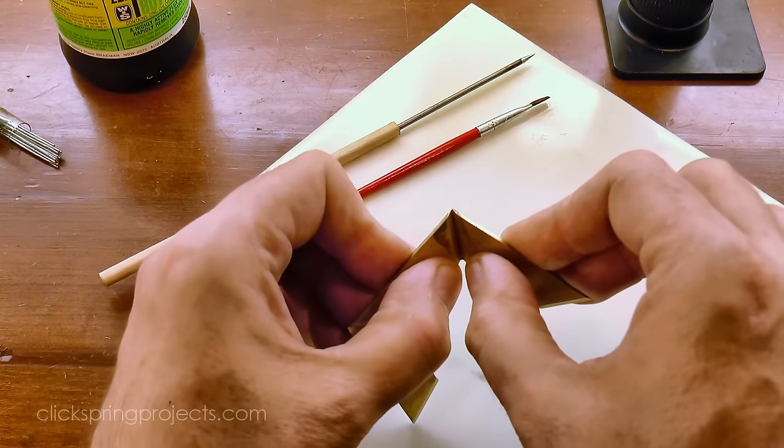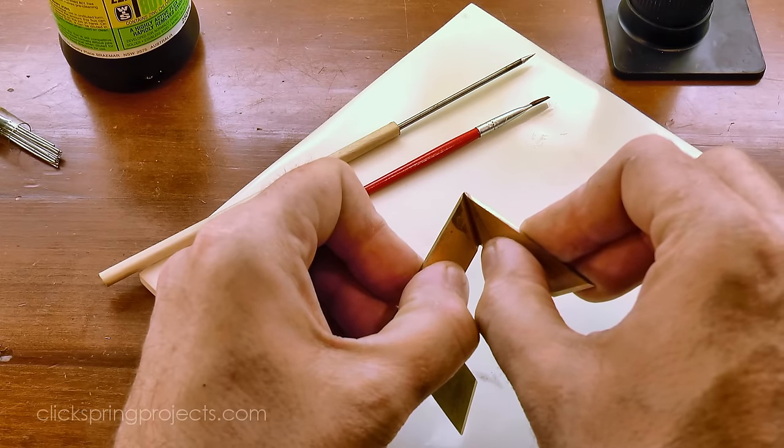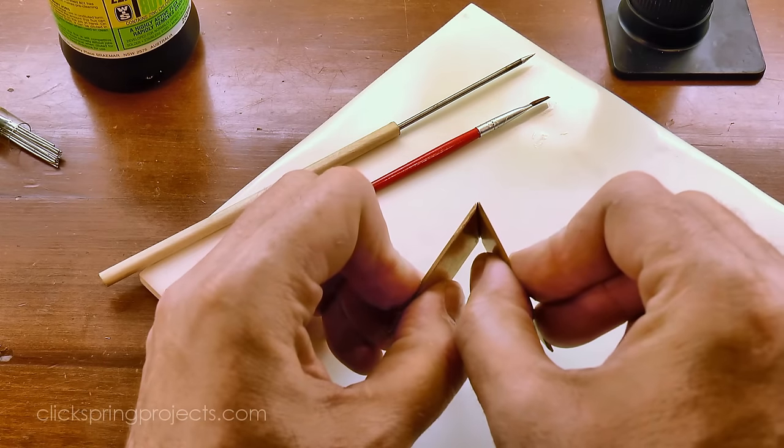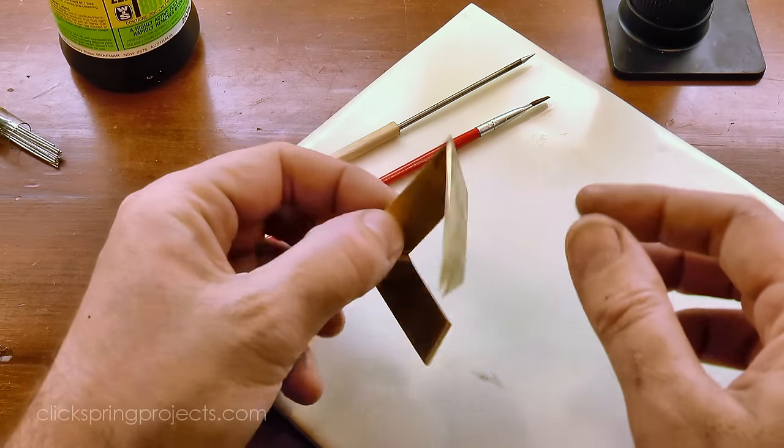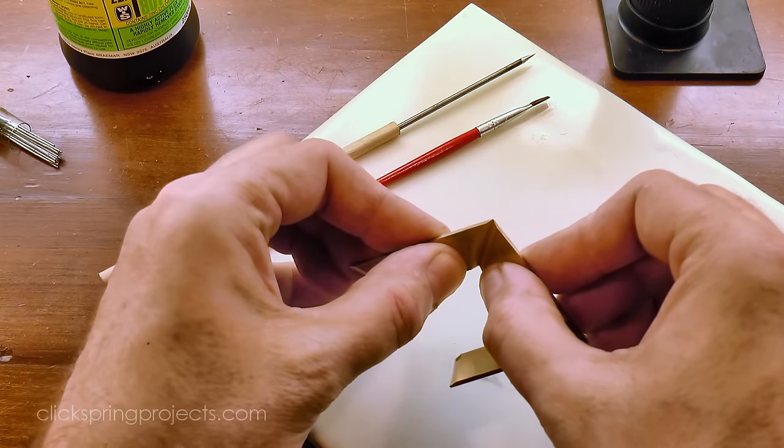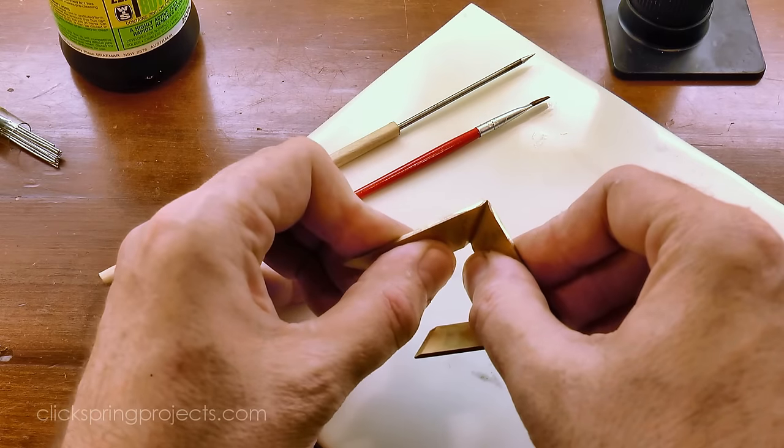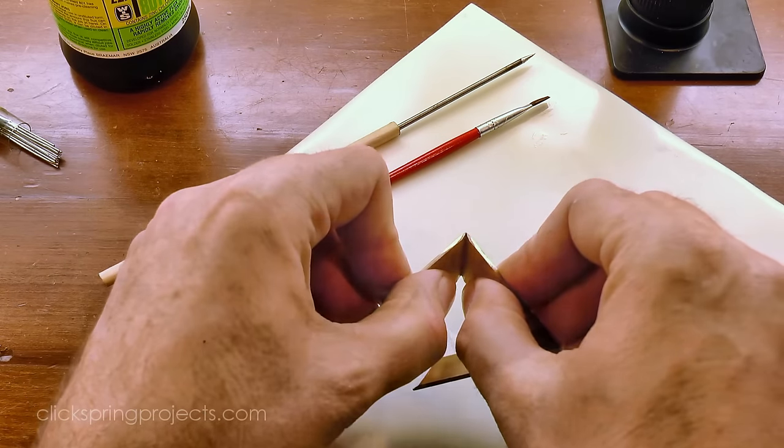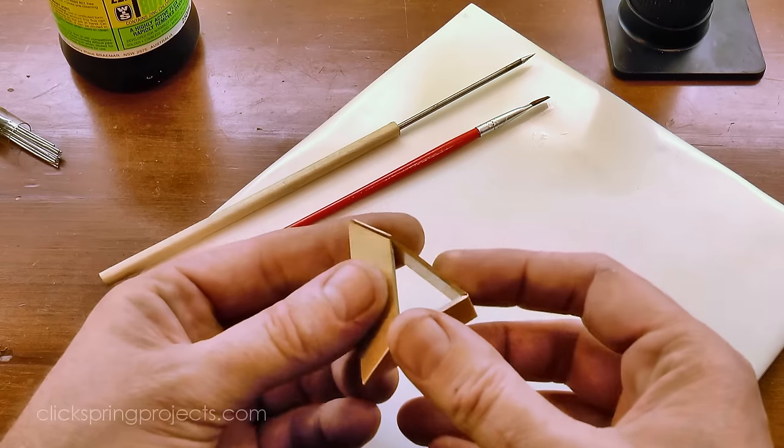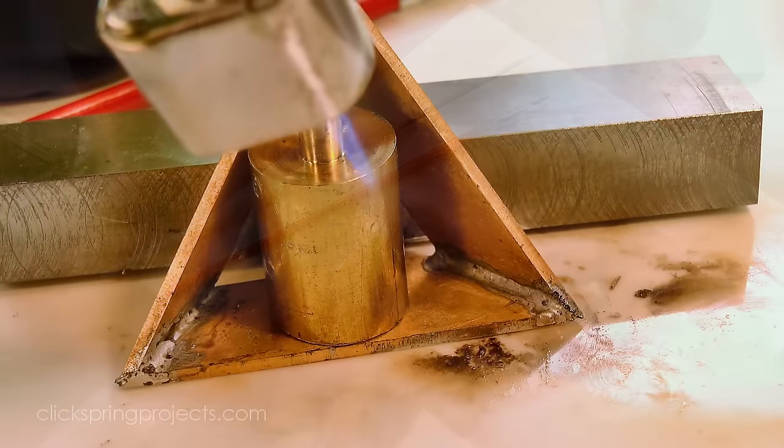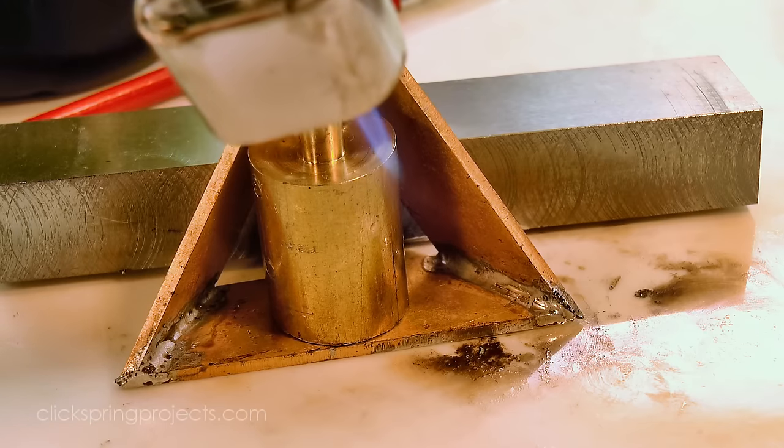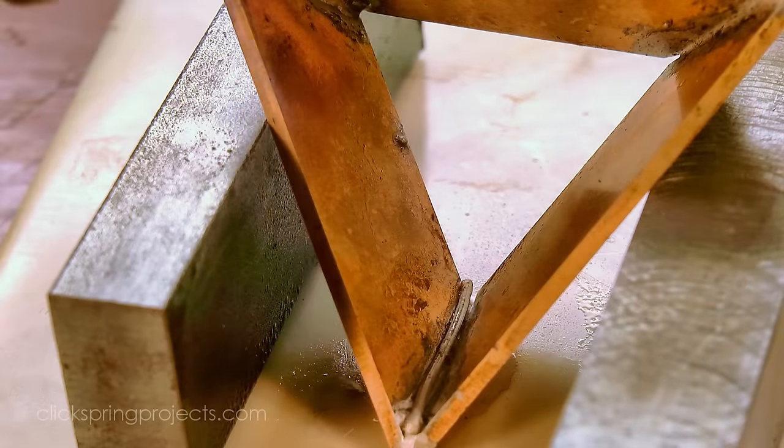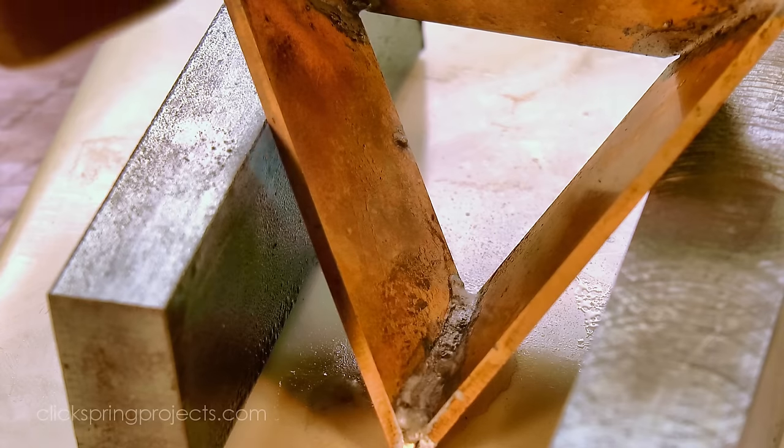Brass work hardens very quickly. If it needs to be bent again, perhaps to correct the angle, it needs to be re-annealed to avoid cracking. And you can see I'm being fairly generous with the solder. I want to completely fill the gap with a nice rounded fillet of metal.